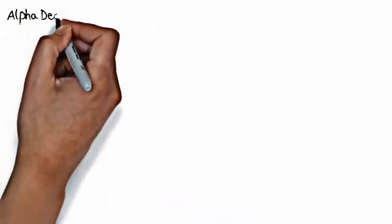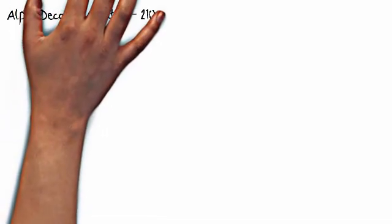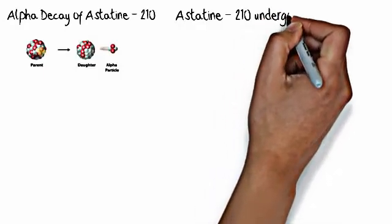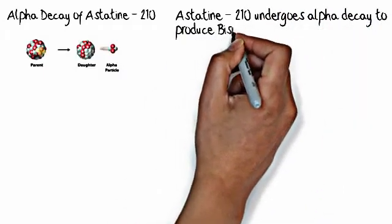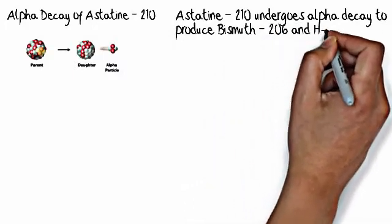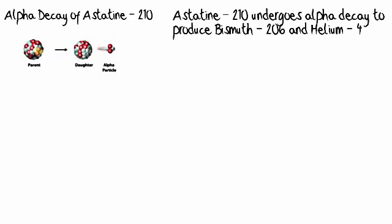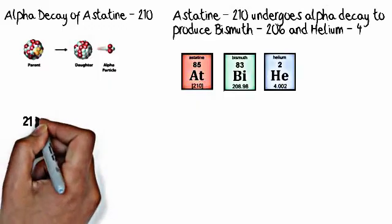Let's try another one of these. We'll do the alpha decay of astatine-210. Astatine-210 will undergo alpha decay. Here is a picture of alpha decay. When astatine-210 undergoes alpha decay, we will produce bismuth-206 and helium-4. Those will be our two products.